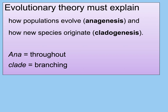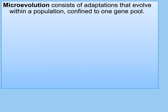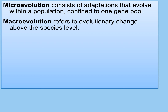Evolution has to explain, one, how populations simply change over time, and two, how new species form. Don't forget that the title of Darwin's book was The Origin of Species — that's very much what Chapter 24 is about. Anagenesis involves a single species sharing accumulated changes throughout the population. In cladogenesis, we have a branch — a separation that may lead to a new species, though there are other possibilities too.